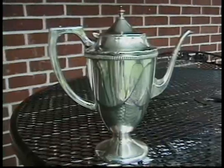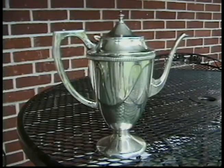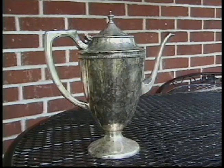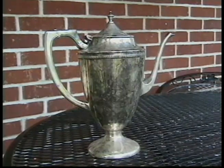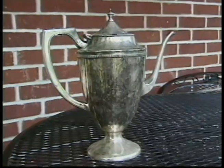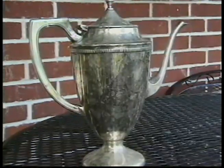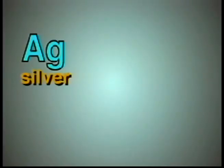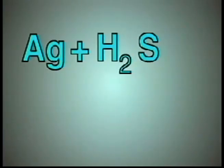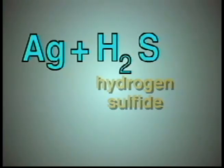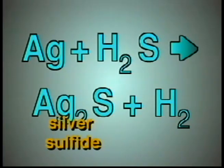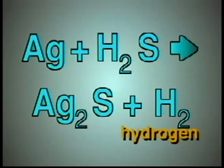Let's take a look at a chemical reaction involving the shiny metal called silver found in this teapot. Over time, silver often becomes dirty looking — a process called tarnishing. Tarnishing involves a chemical reaction between silver and a gas in the air called hydrogen sulfide to form silver sulfide and hydrogen gas. This is expressed by the chemical equation in which silver is symbolized by Ag, which reacts with hydrogen sulfide H2S to yield silver sulfide, or tarnish, and hydrogen gas H2.